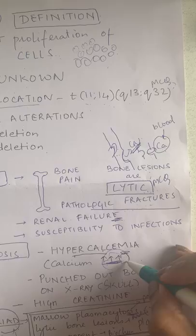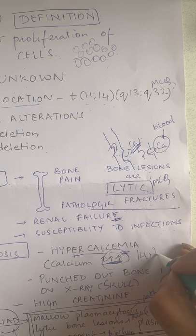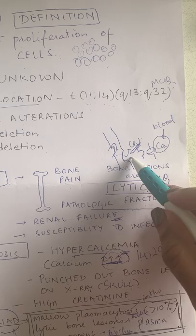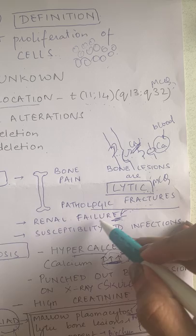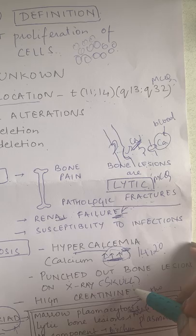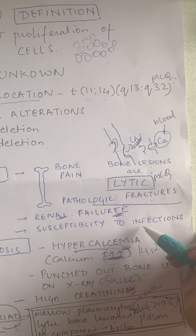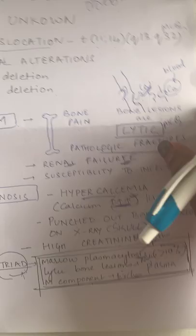The calcium that has come into the blood leads to hypercalcemia. There is a lot of calcium in patients who have multiple myeloma — I have seen calcium levels of 14 and even 20. This very high calcium level leads to a load on the kidney, and when there is excessive load on the kidney it ultimately leads to kidney failure or renal failure, with a high creatinine value. These patients are also quite susceptible to infections, including urinary tract infections.